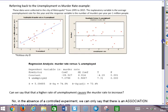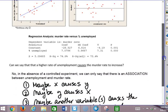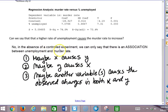So here's what we can say. In the absence of a controlled experiment, we can only say there is an association between unemployment and murder rate. And obviously, that would be unethical here, definitely unethical in this case.